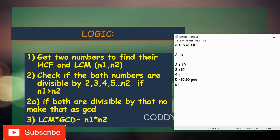We continue checking 6, 7, 8, 9, and 10. For 6 through 9, neither 15 nor 10 is exactly divisible by both. At 10, only 10 divides evenly but not 15. So the GCD variable ends up holding only one value: 5. We have now found the GCD, which is 5.